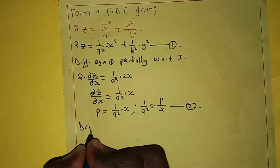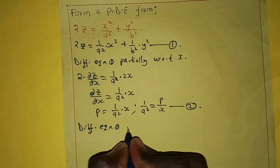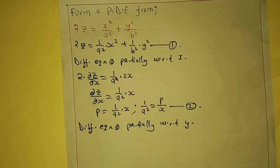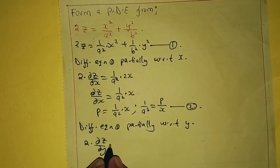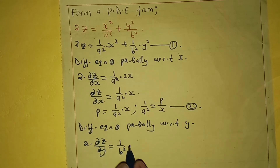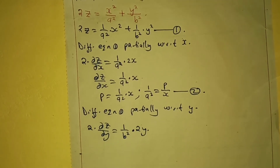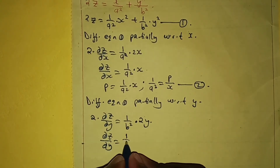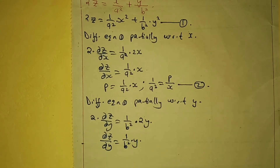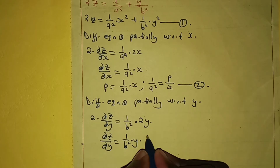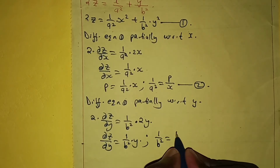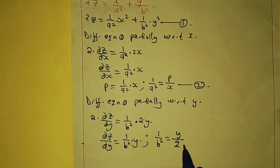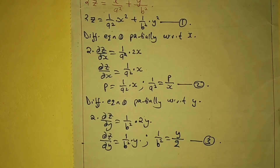Next, differentiate equation 1 partially with respect to y. We get (1/b²) · 2y, which simplifies to ∂z/∂y = (1/b²)y. Since ∂z/∂y = q, making 1/b² the subject gives 1/b² = q/y. We call this equation number 3.